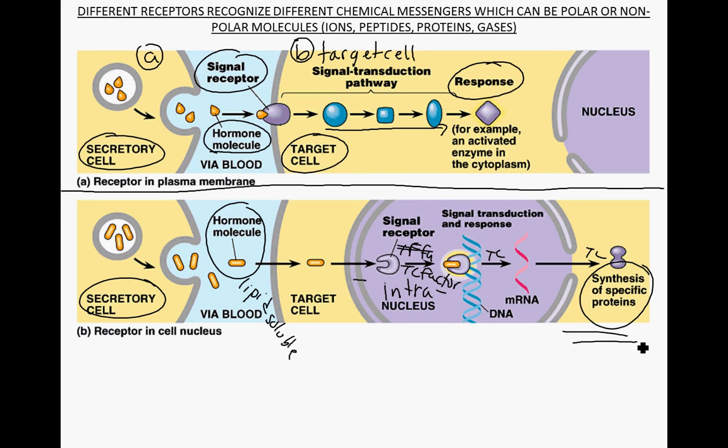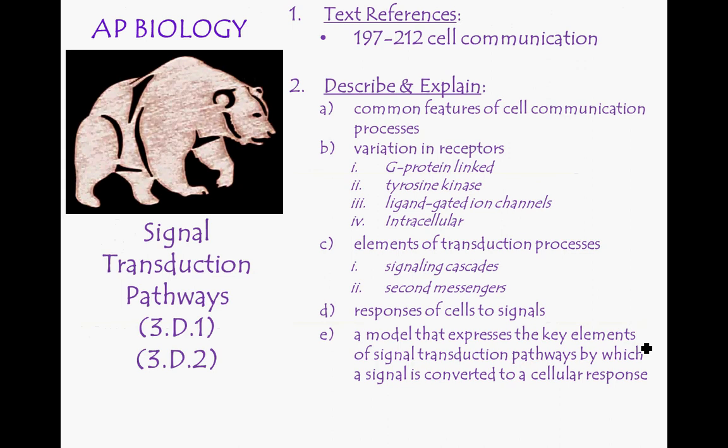You should be able to identify that basic pattern of all signal transduction pathways: a signal binding to a receptor, the receptor activating some sort of pathway, and that pathway leading to a cell response. You're trying to describe and explain the common features of cell communication processes. Thanks for listening — bring your questions to class.